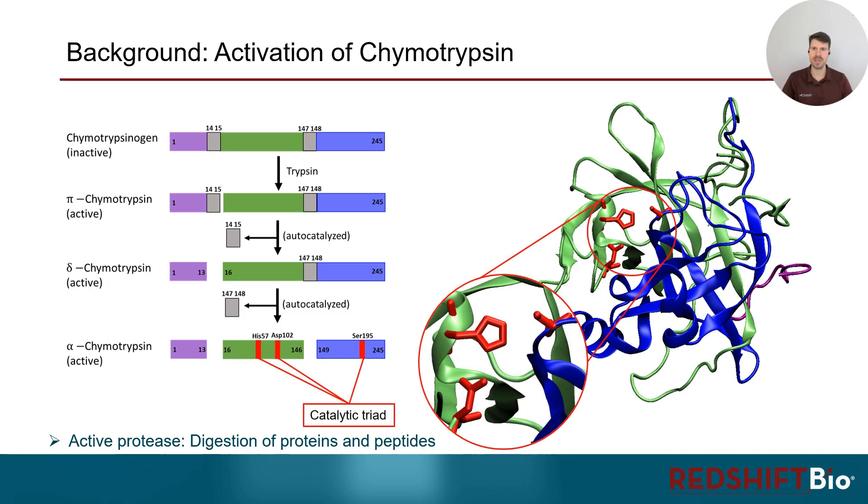The residues forming the active site are well separated on the protein sequence, but are very close in space in its higher order structure. This highlights that the slightest overall structural change can have a substantial impact on the arrangement of the catalytic triad and the activity of the enzyme. Therefore, precise evaluation of the protein high order structure is critical to ensure protein function in general.